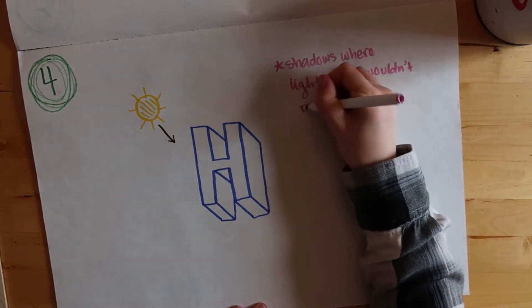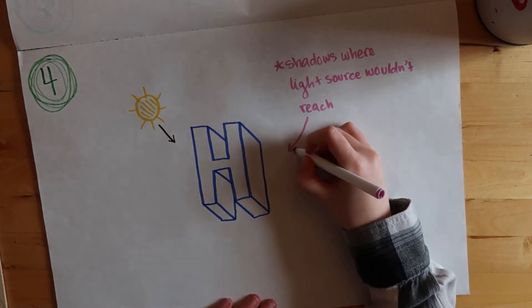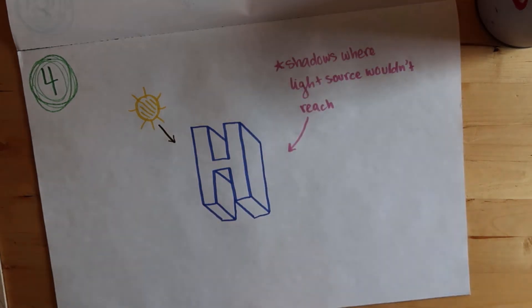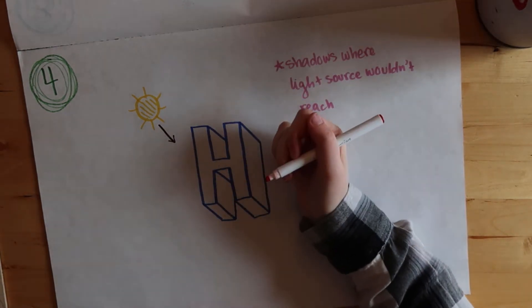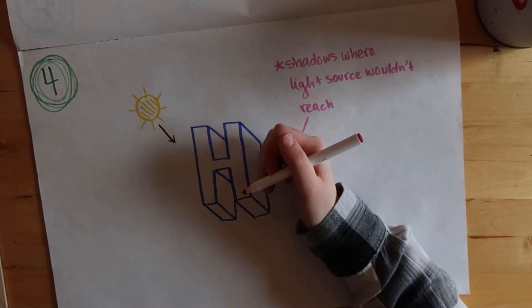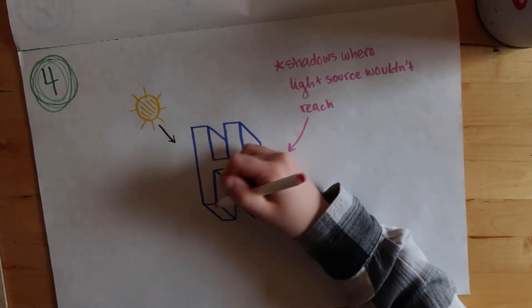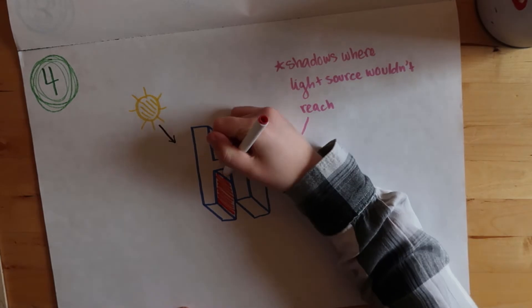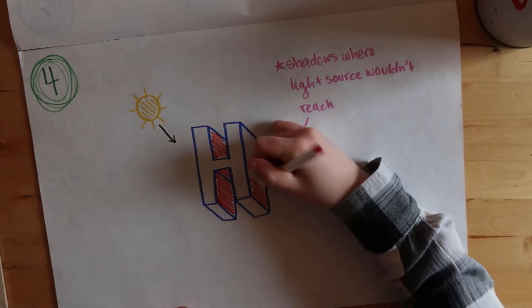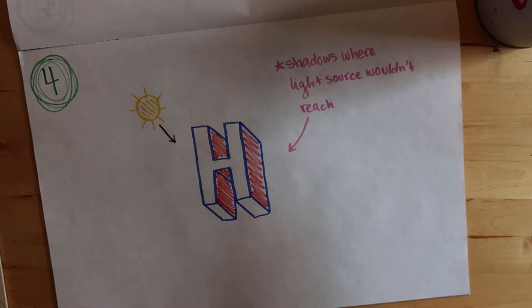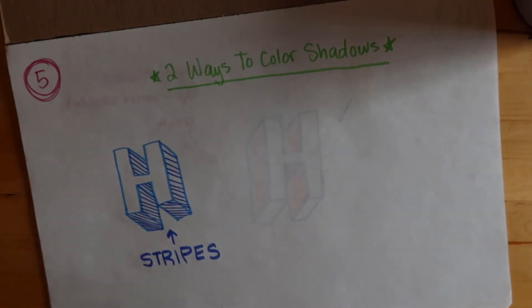If there was say a little sun there, wherever the rays would not reach and wherever would be in shadow, and all of those lines will typically be the same side if that makes sense. And all the parallel lines that you made earlier will probably all be shaded together.